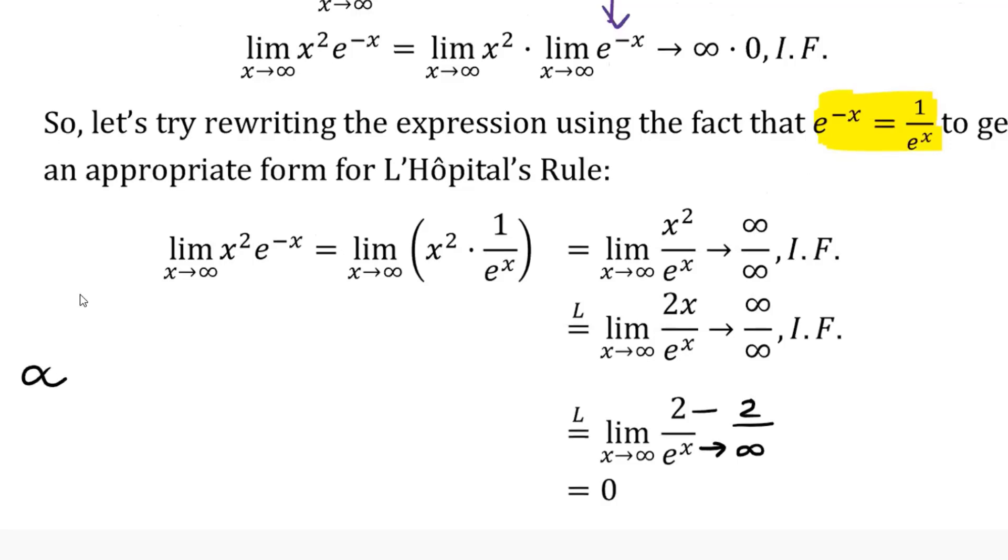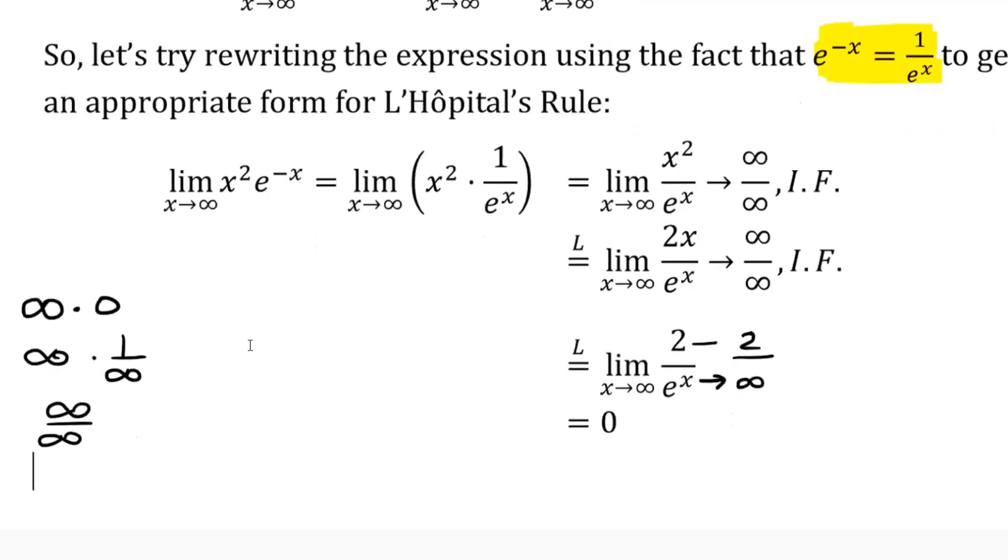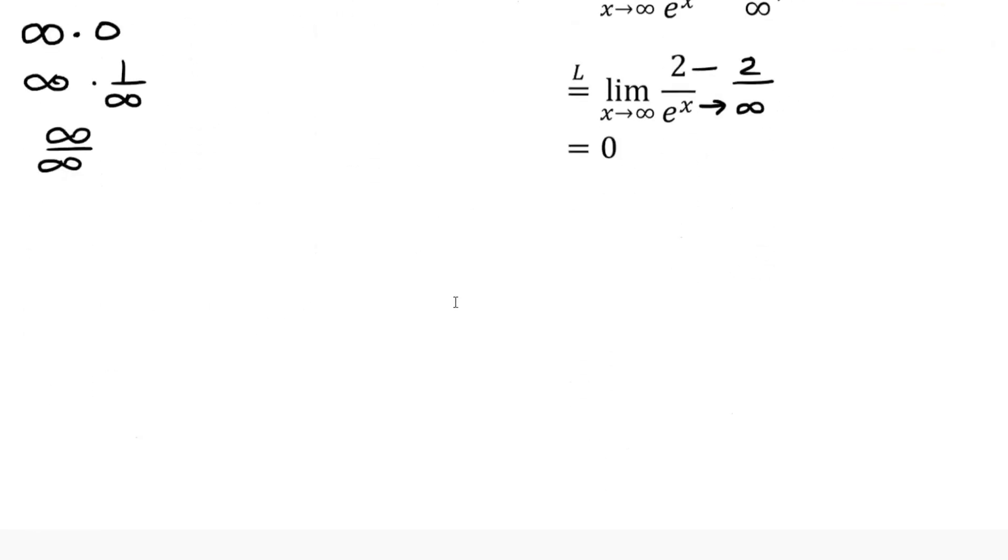When we have an infinity times 0 indeterminate form, we can think of 0 as being 1 over infinity. And so rewrite it as infinity over infinity. And this is a procedure that we're going to do for a lot of different problems. Anytime you have an infinity times 0, this is something you can try.